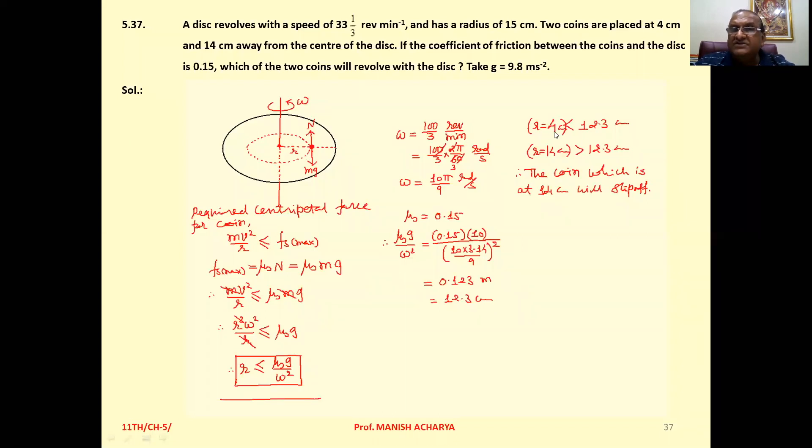Now one coin is placed at r equal to 4 centimeter. Yes, that is less than 12.3 centimeter. And the second coin, which is placed at r equal to 14 centimeter. But 14 centimeter is greater than 12.3 centimeter. Means this second coin, which is placed at 14 centimeter, for that, this condition is not satisfied. So we can say this first coin, which is at 4 centimeter, will remain on the disk. And the coin, which is at 14 centimeter, will slip off from the disk.